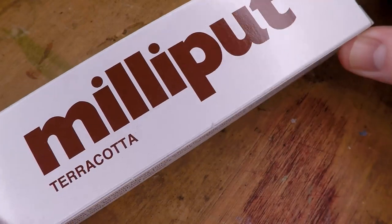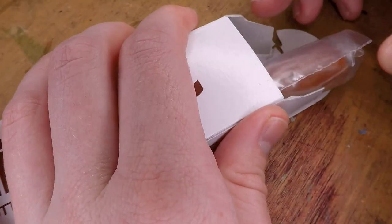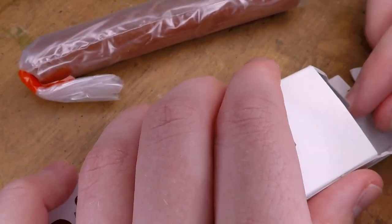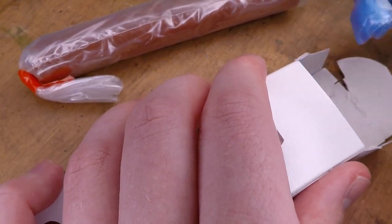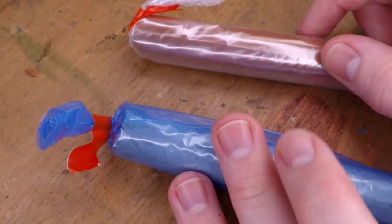So here I have my package of Milliput and as you can see this is the terracotta version as opposed to the standard yellow gray. I don't know that the properties of this version is any different from the standard version but this was just cheaper.